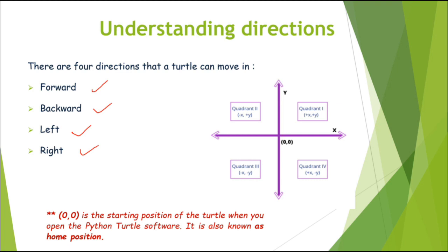Suppose the turtle is at the starting position — zero zero — that means the x position is zero and the y position is also zero. If I move in this direction, x will increase, meaning I am moving on a horizontal line in the forward direction. When I move in the opposite direction, x becomes negative — so x is positive when moving right and negative when moving left.